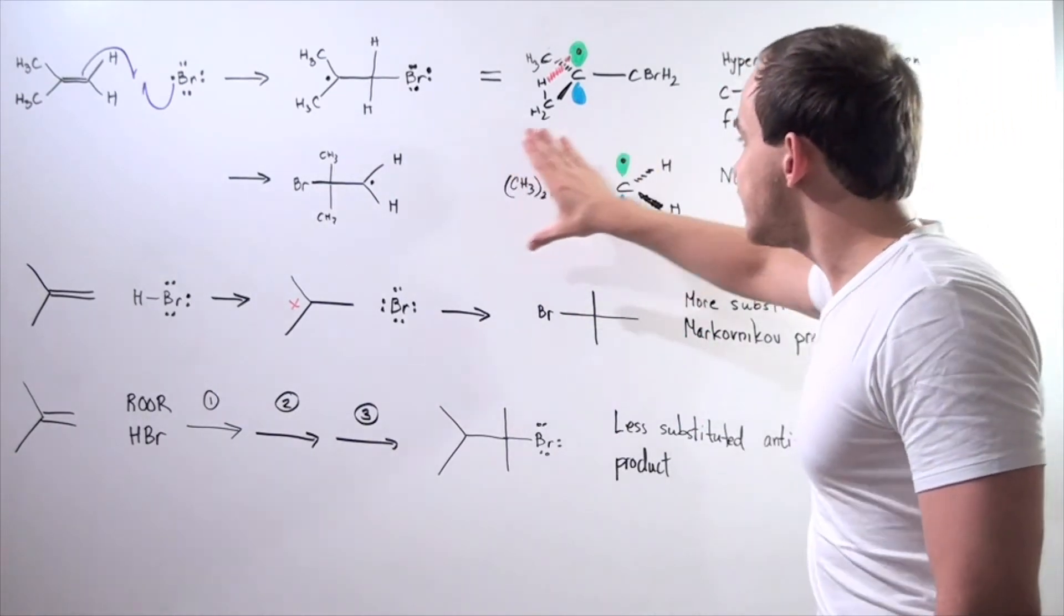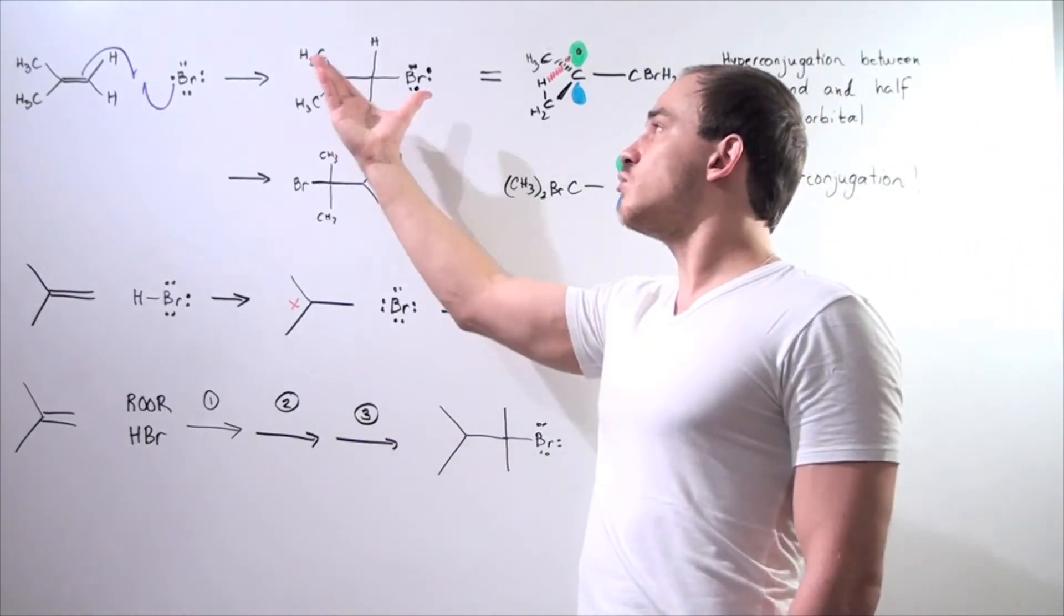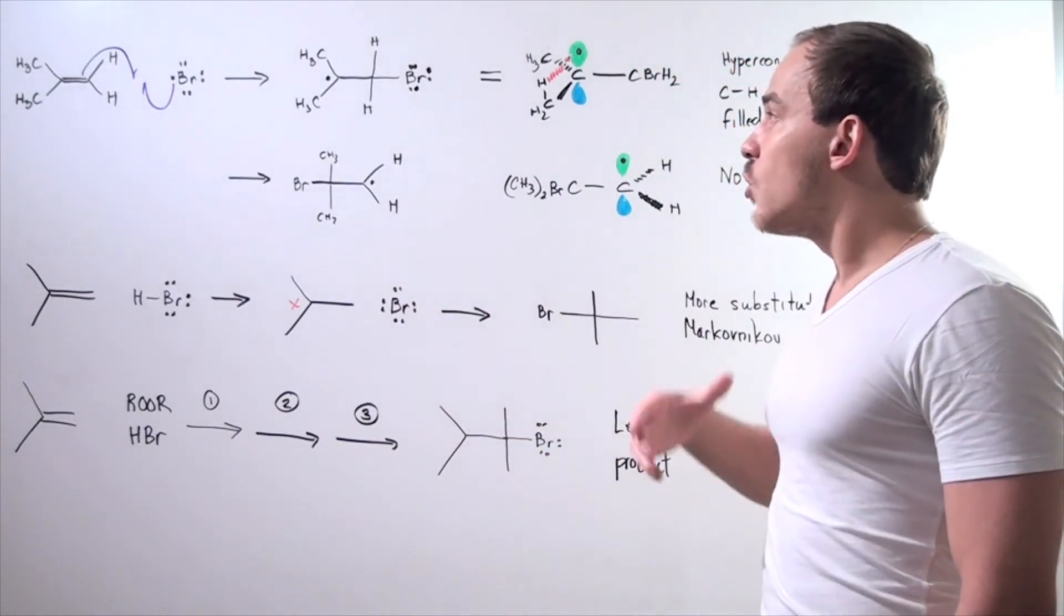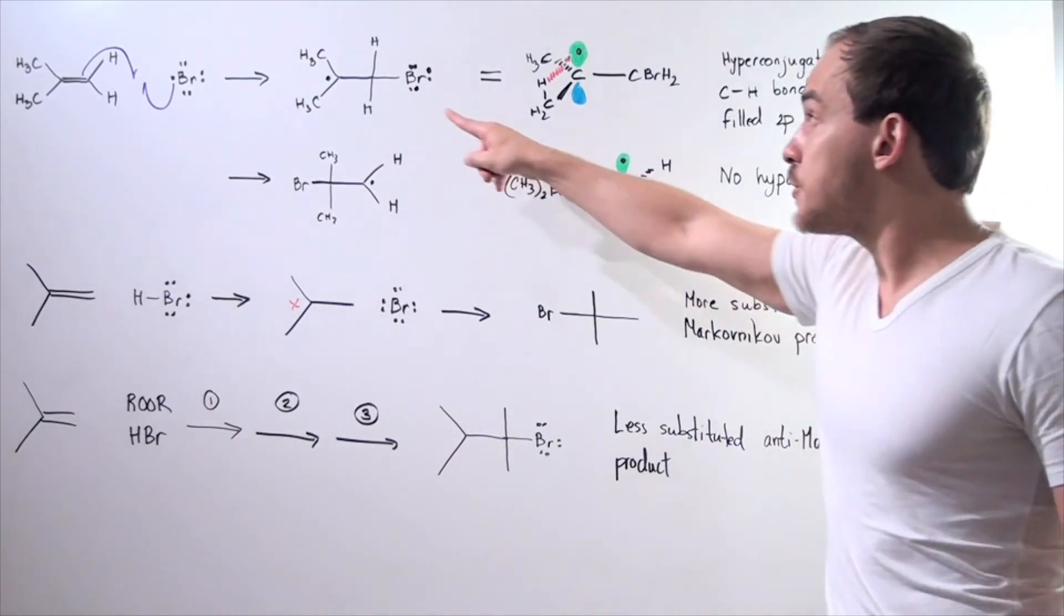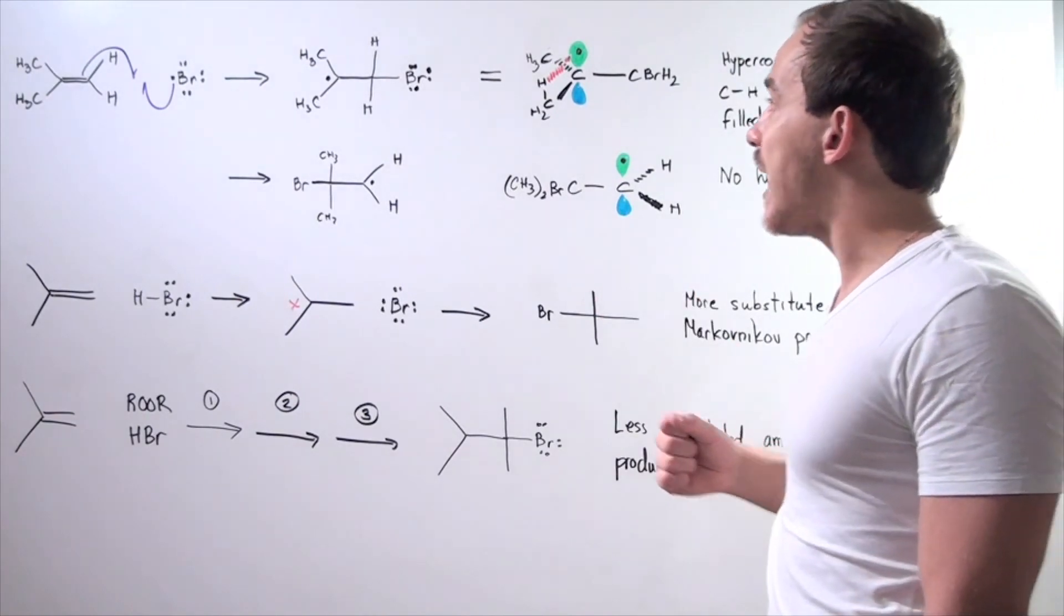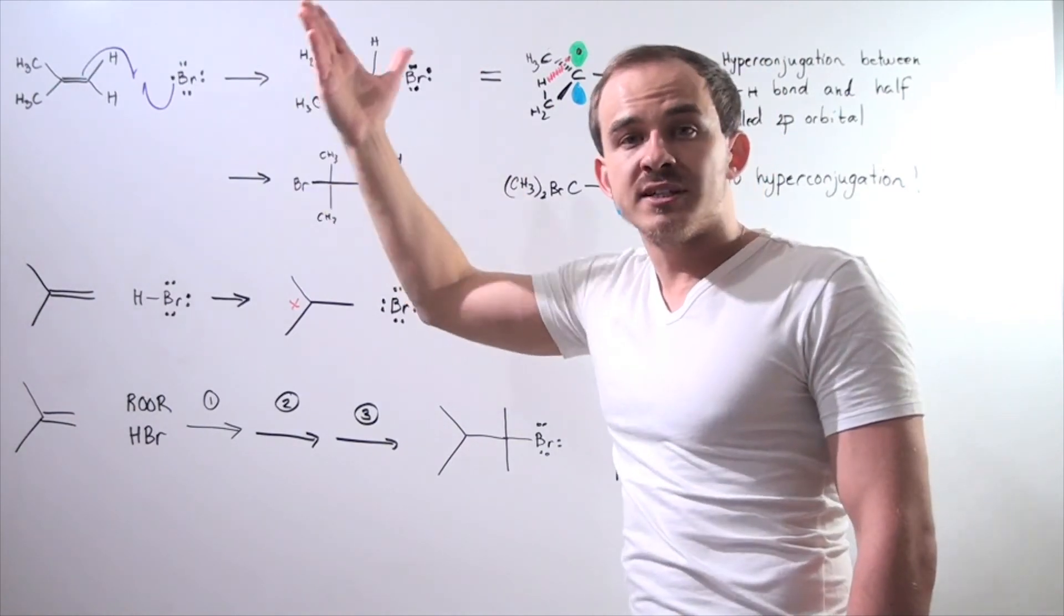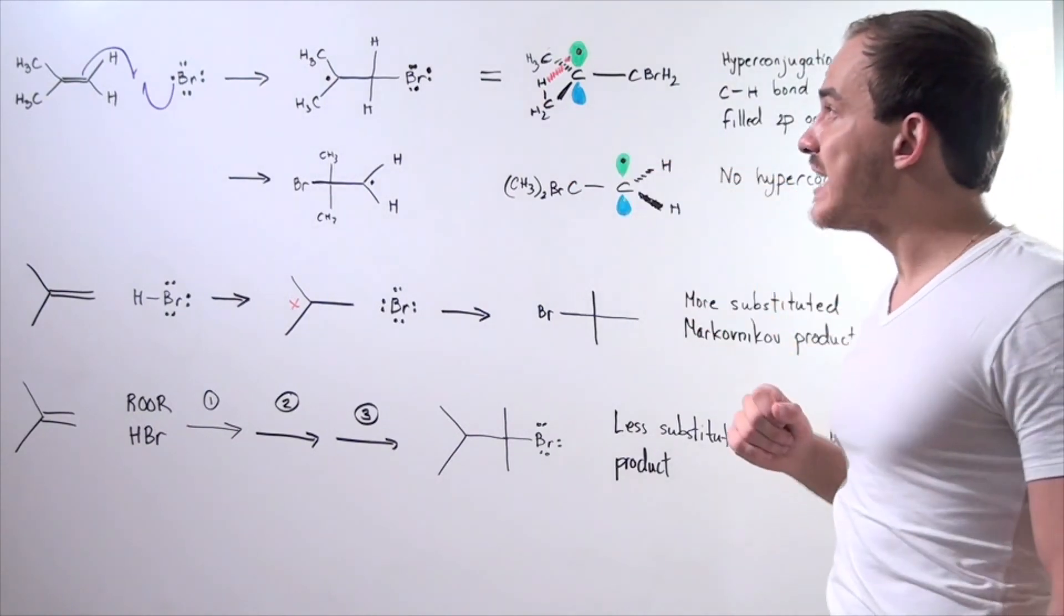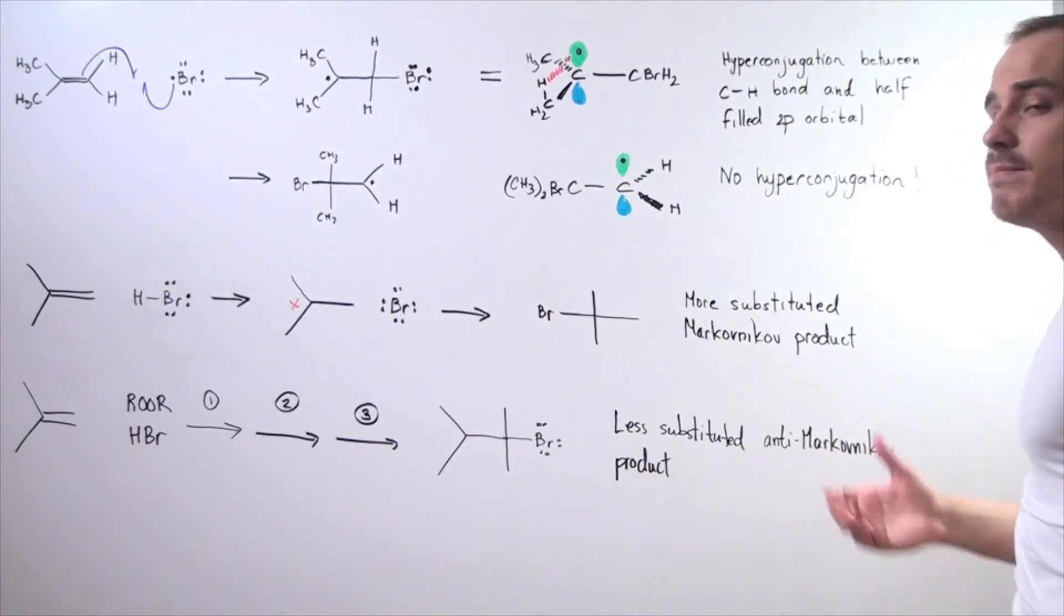So this is the less stabilized molecule, and this is the more stabilized molecule. And because this radical intermediate is thermodynamically more stable than this one, we have the less substituted anti-Markovnikov intermediate formed. And in the last step, we have another molecule adding to this side, forming our final halogen containing hydrocarbon that has the halogen attached to the less substituted side. And hence, it's known as anti-Markovnikov product.